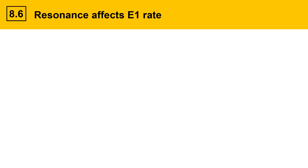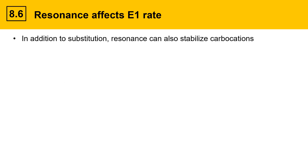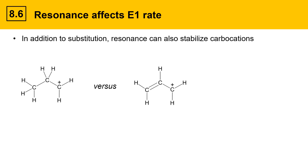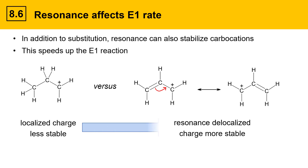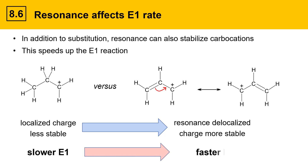Carbocations are also influenced by resonance. In addition to substitution, resonance can also stabilize carbocations and influence E1 rate. Consider two carbocations: one on the left is a primary carbocation with no adjacent double bond. The one on the right is also a primary carbocation but has a double bond next door. That difference is significant because electrons can be delocalized to give a resonance structure with distributed positive charge. Resonance-delocalized charge is more stable than localized charge, making the right-hand structure more stable and speeding up the E1 reaction for that resonance-stabilized cation.